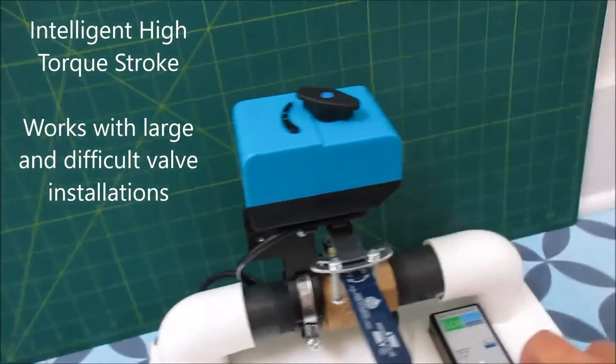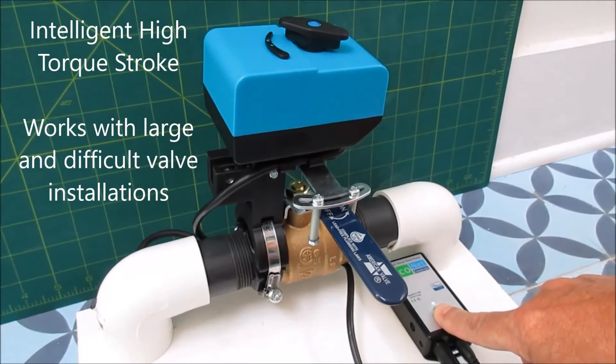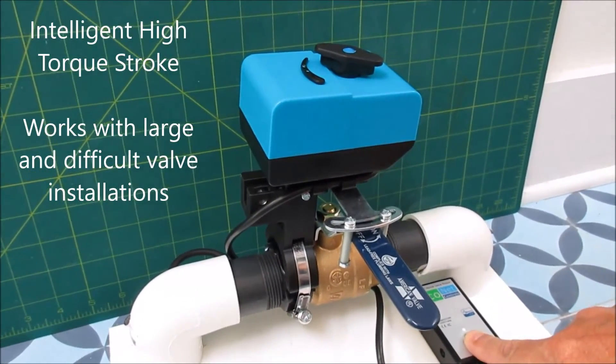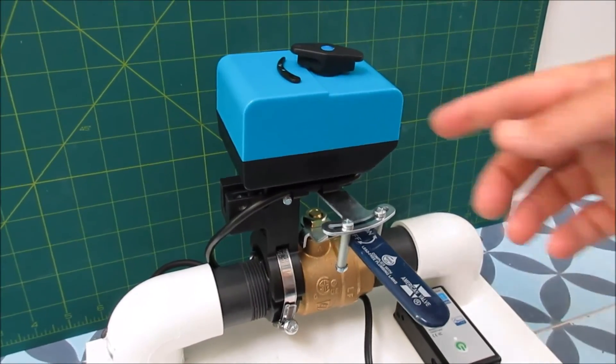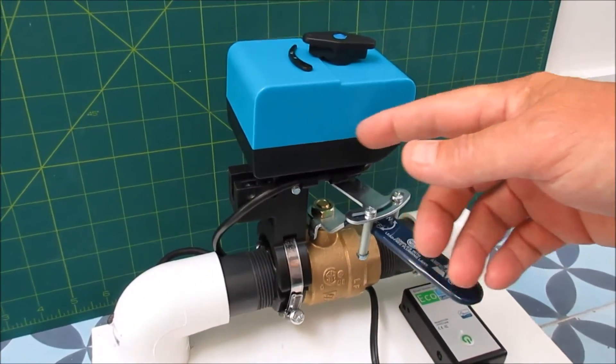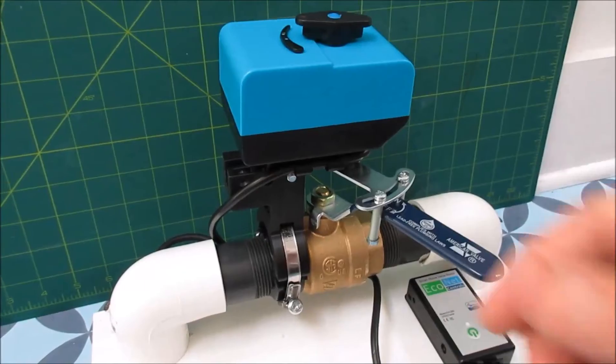I'm just going to show you the stroke for the open on this valve which happens to be difficult. Let's watch it. You can see it stresses out a bit. It moved maybe a few mils this way when it was getting the stroke started but then it recovered.